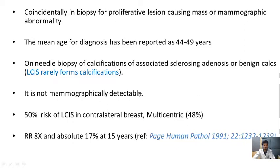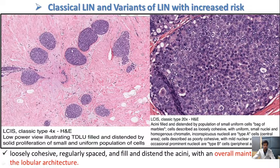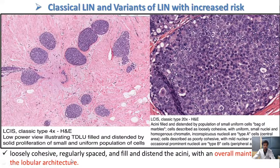It is generally not mammographically detected, and there is a 50% risk of contralateral involvement; in 48% it is multicentric. The classic variant involves the terminal duct lobular unit being filled and distended by a solid proliferation of small, uniform cells — generally referred to as a 'bag of marbles.' These loosely cohesive, regularly spaced cells fill and distend the acini with overall maintenance of the lobular architecture.